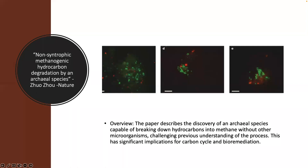First, I want to discuss the case study we'll be going over by Zhu Xiao et al., titled 'Non-Syntropic Methanogenic Hydrocarbon Degradation by an Archaeal Species.' Overall, this paper describes a single archaeal species that is able to degrade hydrocarbons by itself without a syntropic interaction with bacteria. It was thought that communities of bacteria around ocean floor vents on oily sludge could do this methanogenic degradation of hydrocarbons — breaking down hydrocarbons and making methane — but the community was required. These researchers found that that's not necessarily the case.